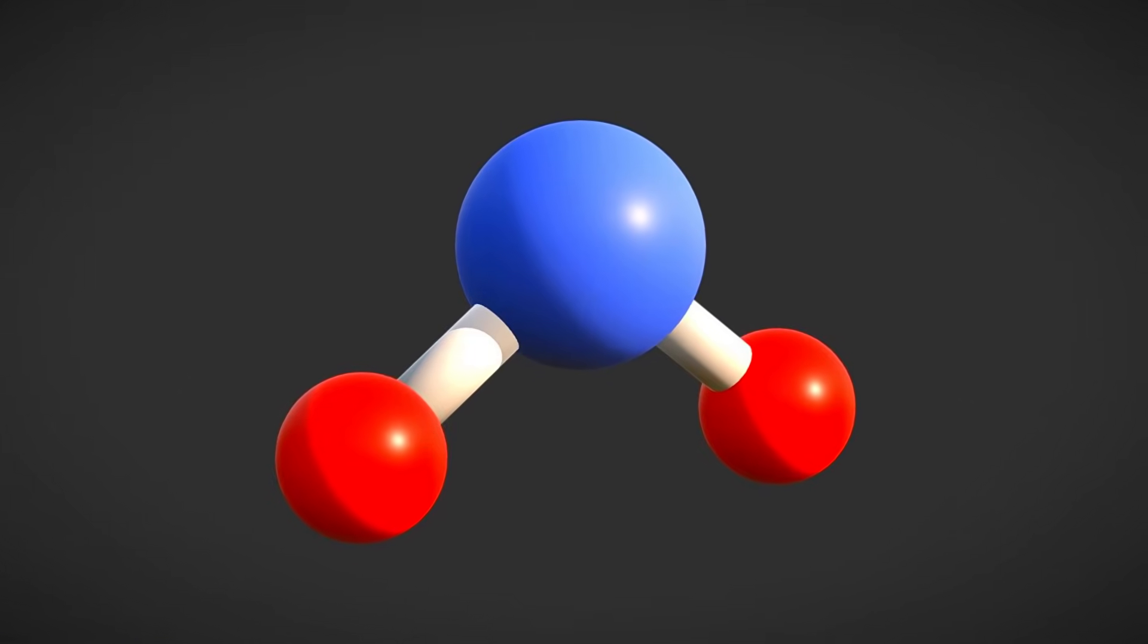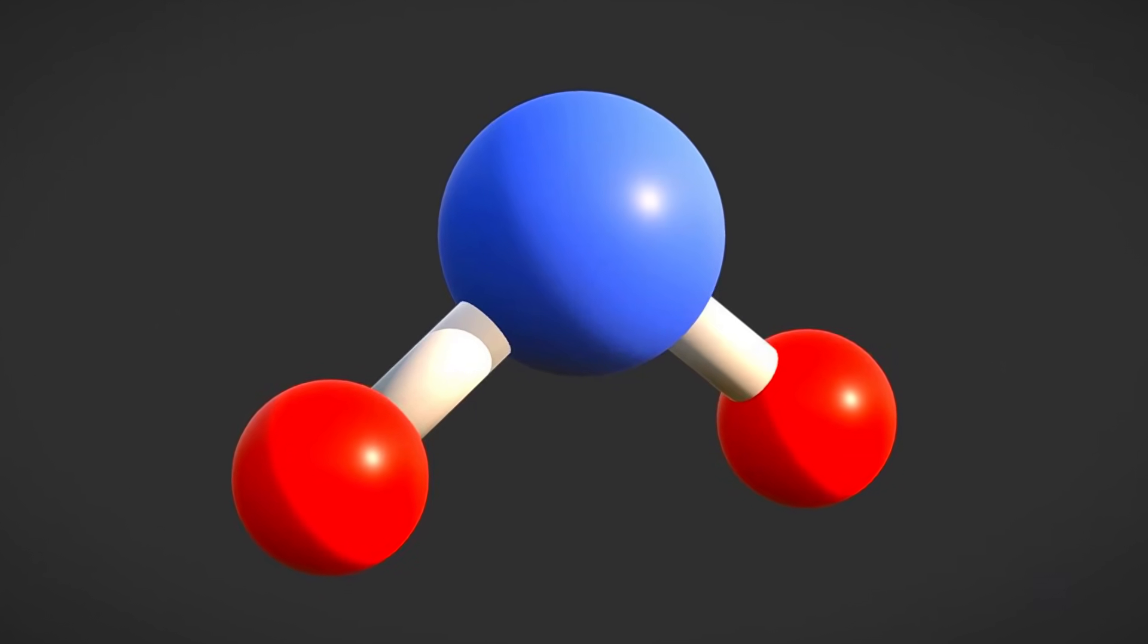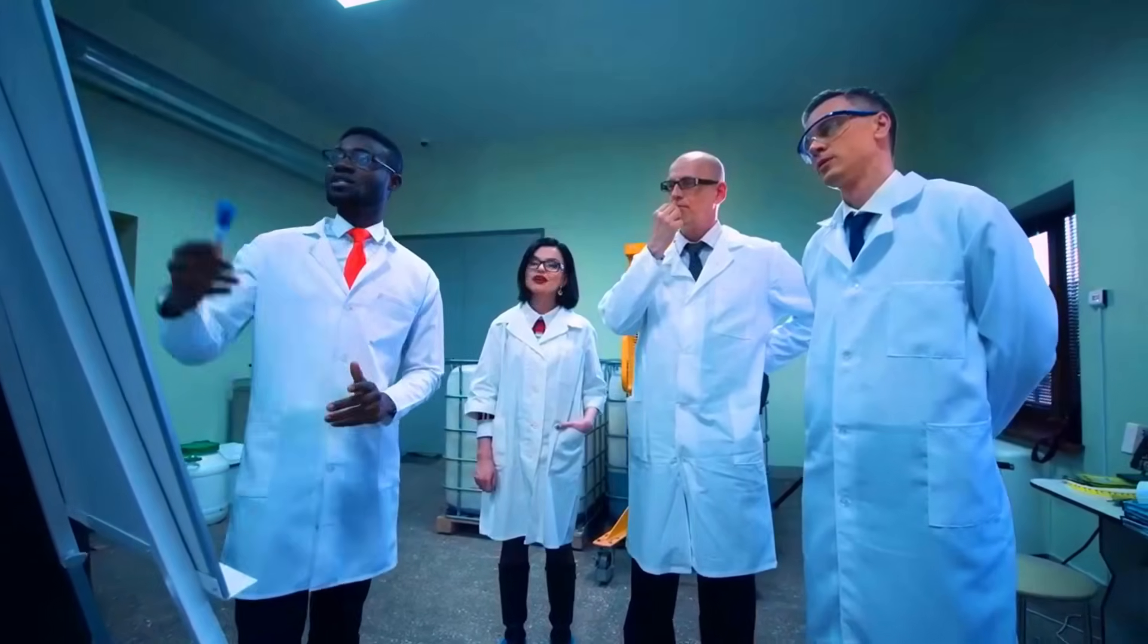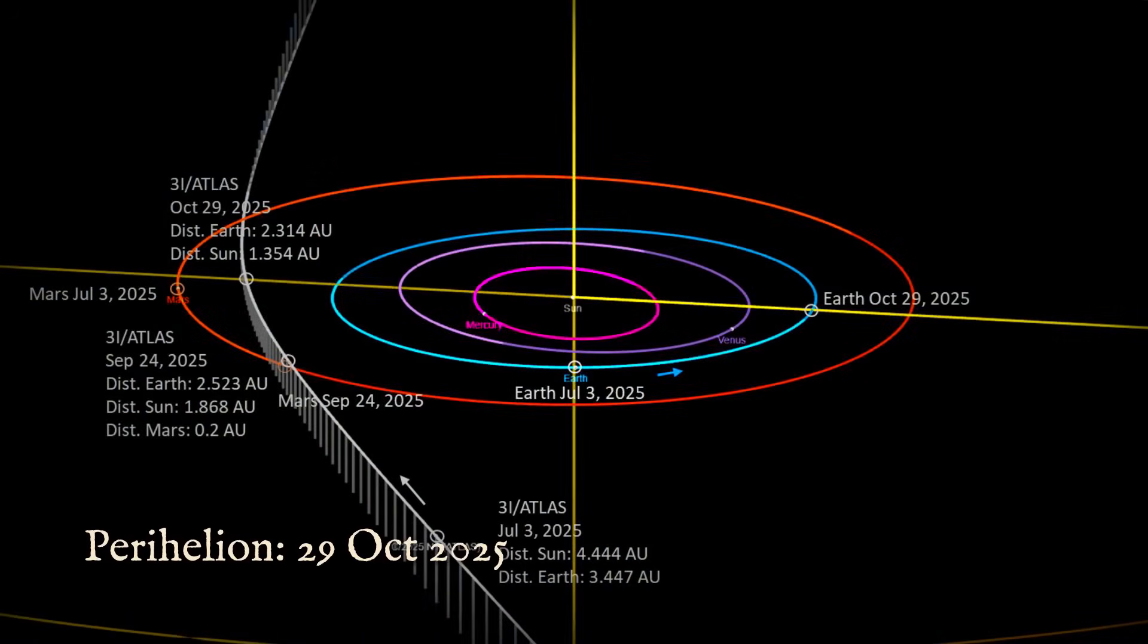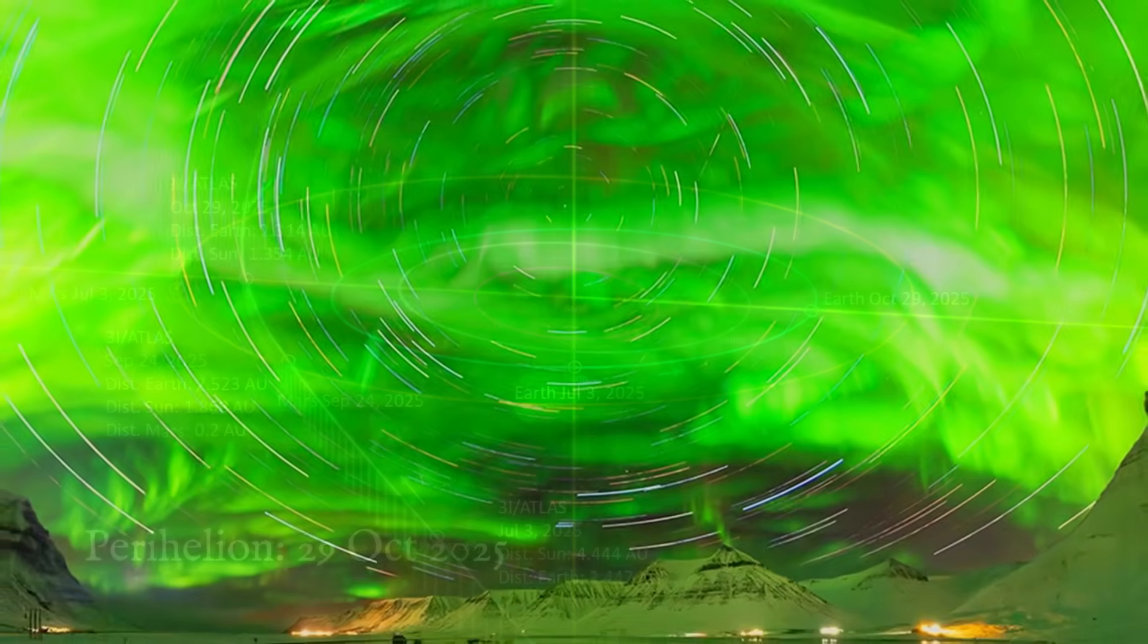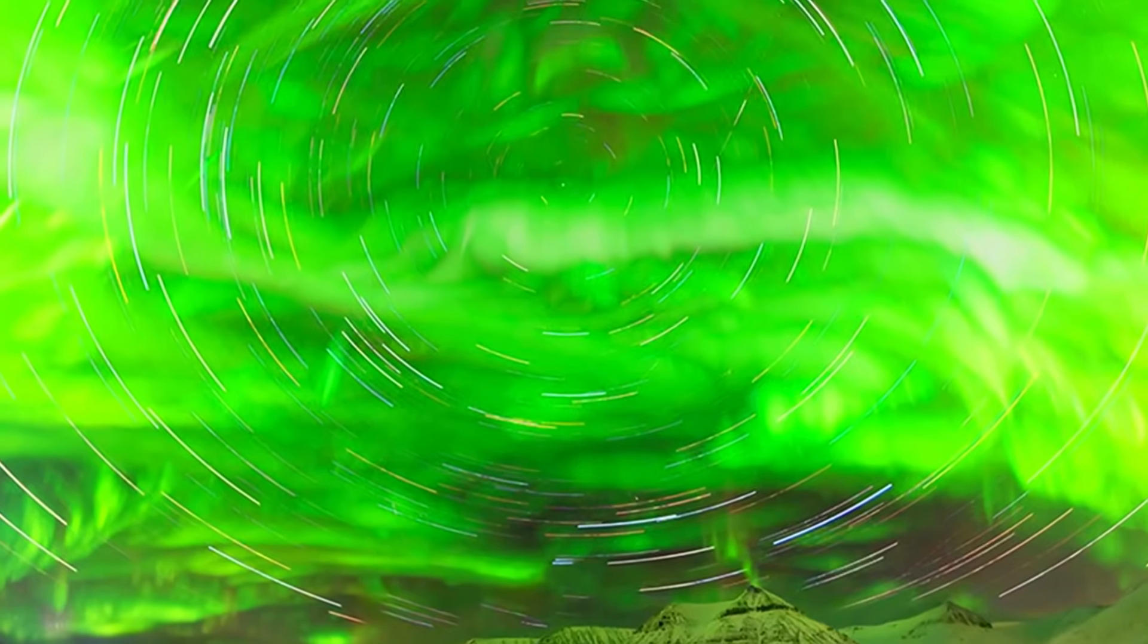Yet, key questions remain. No previous comet shows an identical chemical pattern, and the exact triggers for its early activity are still under debate. With perihelion approaching on October 29th, 2025 and observation windows closing, the scientific community faces a rare deadline.